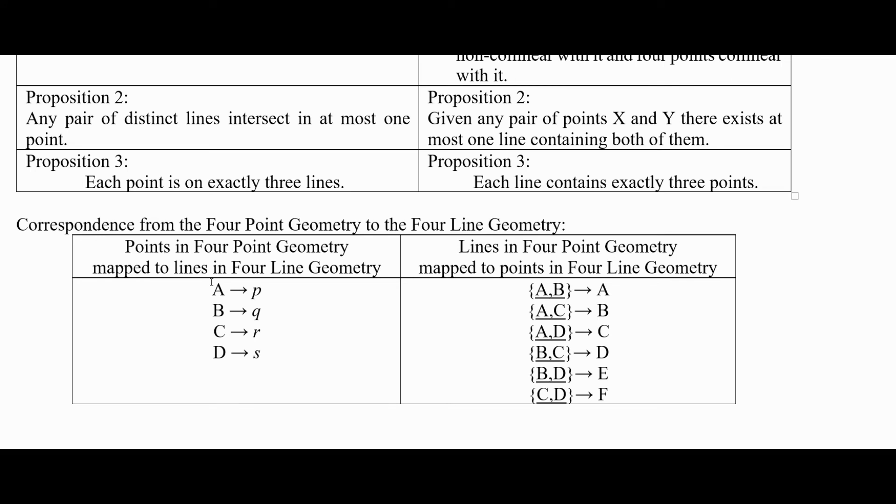point A on the left to point, to line P on the right, point B on the left to point, to line Q on the right, and C, point C goes to line R, point D goes to line S. And if you do this, then that means that,